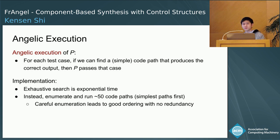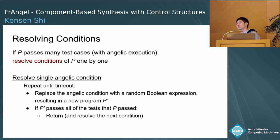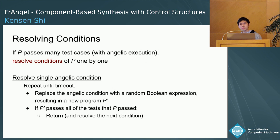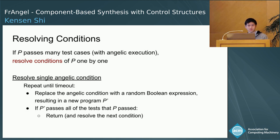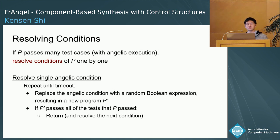As the last step, once we find an angelic program that passes many test cases using angelic execution, we resolve or fill in its conditions one by one. To resolve a single angelic condition, we repeatedly replace it with a randomly generated Boolean expression. The resulting program might still have other angelic conditions, so we use angelic execution again. If it still passes all the tests it used to, we've succeeded for that specific angelic condition and can move on to the next. In this way, if we're always successful, we end up with a concrete non-angelic program that still passes all of the test cases.